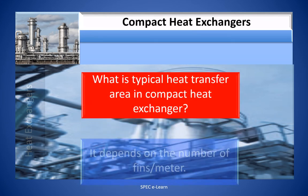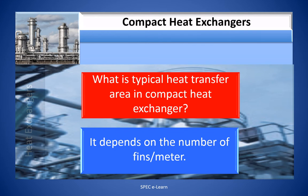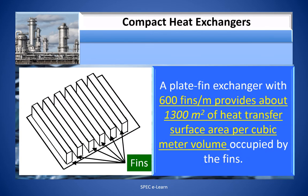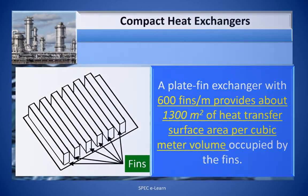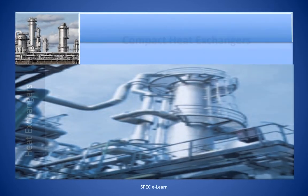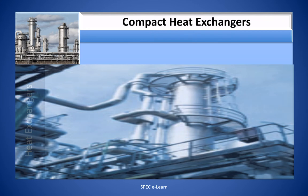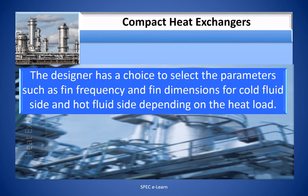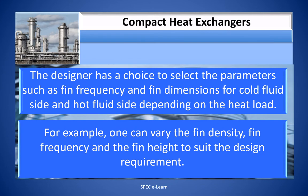What is a typical heat transfer area in a compact heat exchanger? It depends on the number of fins per meter. A plate fin heat exchanger with 600 fins per meter provides about 1,300 square meters of heat transfer surface area per cubic meter of volume occupied by the fins. The designer can select parameters such as fin frequency, fin dimensions for cold and hot fluid sides depending on heat load — varying fin density, fin frequency, and fin height to suit the design requirement.